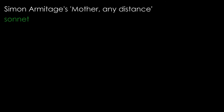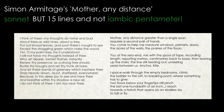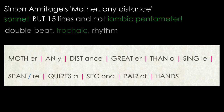Simon Armitage's poem Mother Any Distance uses rhythm in an interesting way. It is nominally a sonnet, although it does not strictly follow the rules — it has 15 lines when it should only have 14, and it should be written in iambic pentameter with regular lines of 10 syllables each. Just by looking at the poem side by side with Elizabeth Barrett Browning's sonnet we can tell that Armitage has broken the rules. Some lines have as few as four syllables and others as many as 16. What does emerge, however, when you read the lines is a double beat — albeit trochaic rather than iambic — rhythm that continues over line breaks: 'Mother, any distance greater than a single span requires a second pair of hands.'